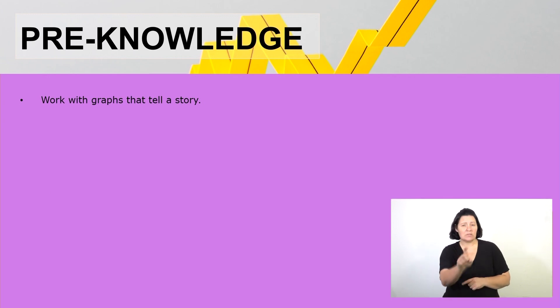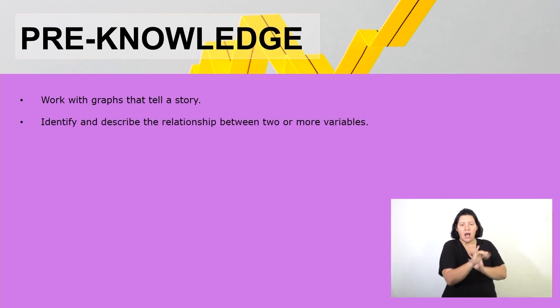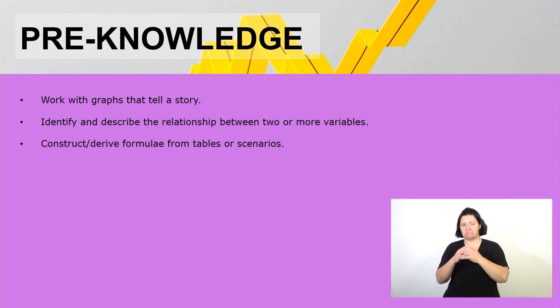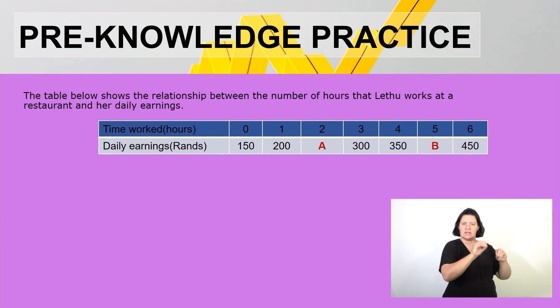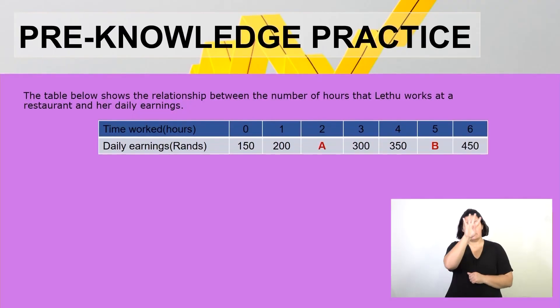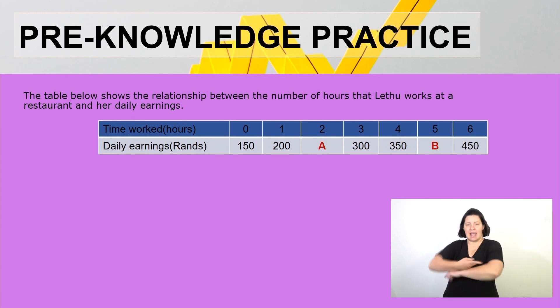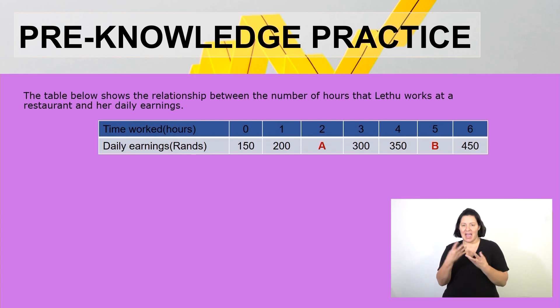What you should know is that you must be able to work with graphs that tell a story, identify and describe the relationship between two or more variables, construct or derive a formula from tables or scenarios, and use information presented on a table to draw a graph. Let's look at our first activity, just to remind ourselves about this topic. The table below shows the relationship between the number of hours that Letu works at a restaurant and her daily earnings. From a table we get the dependent and independent variables, and we always get missing values.